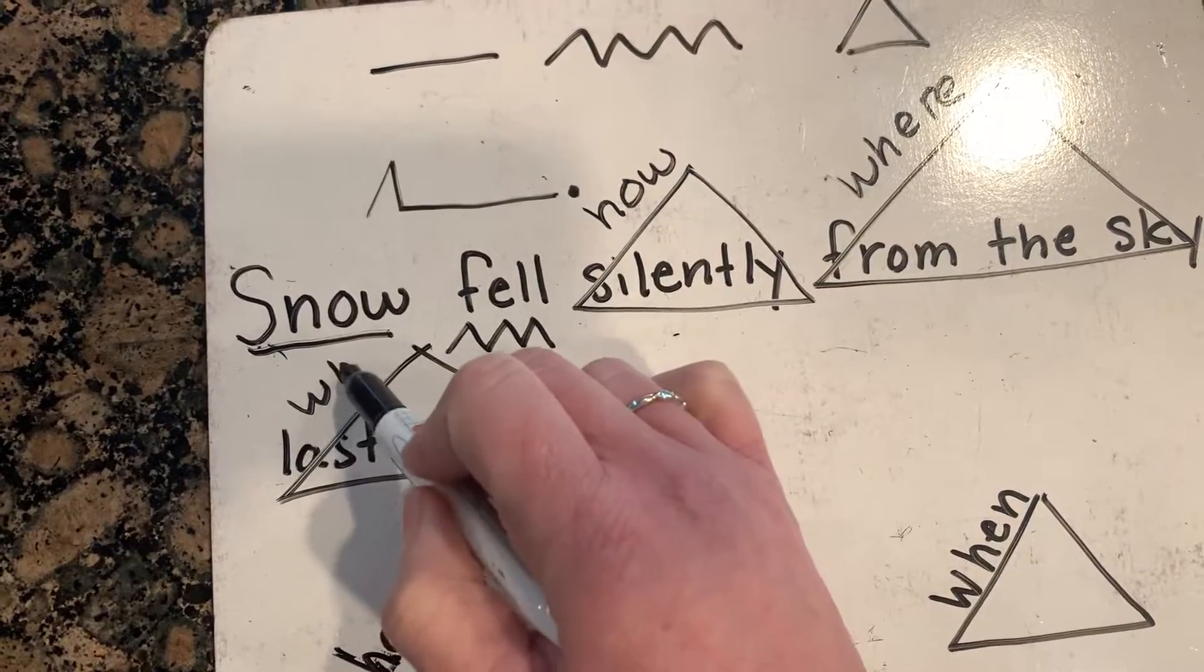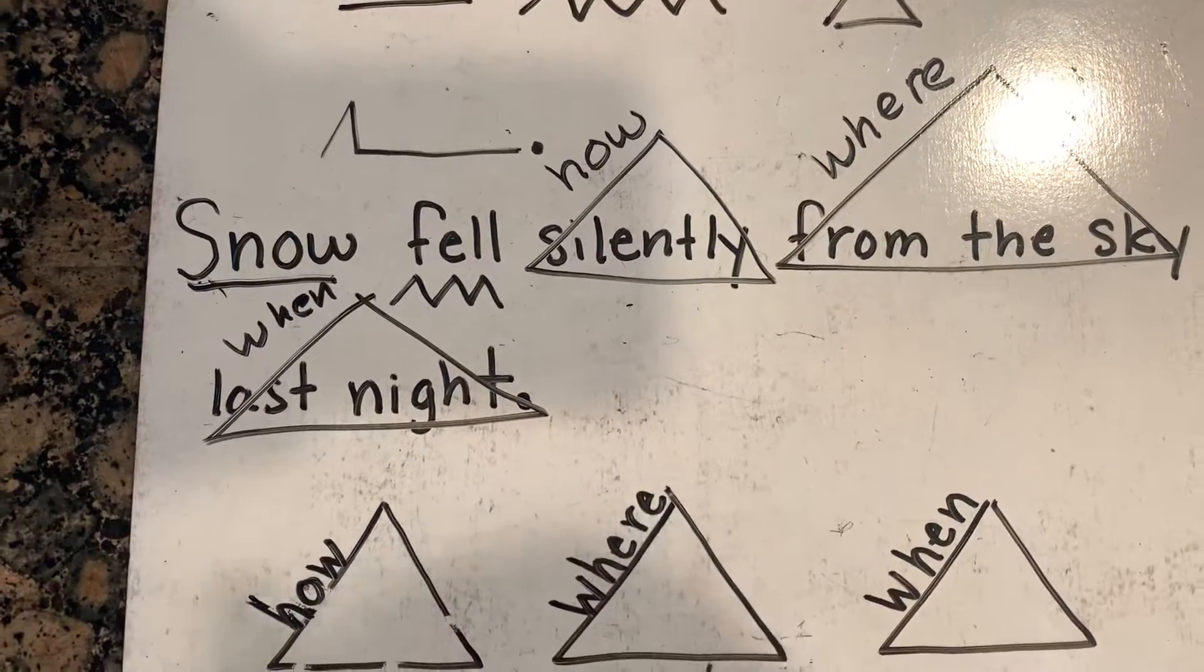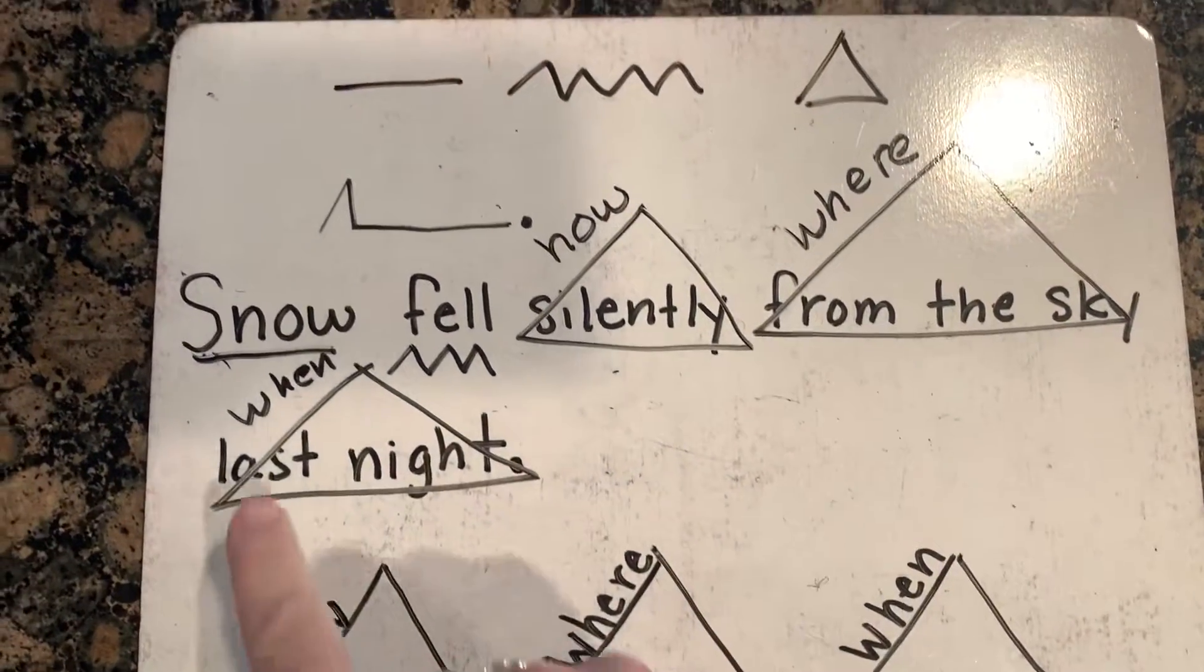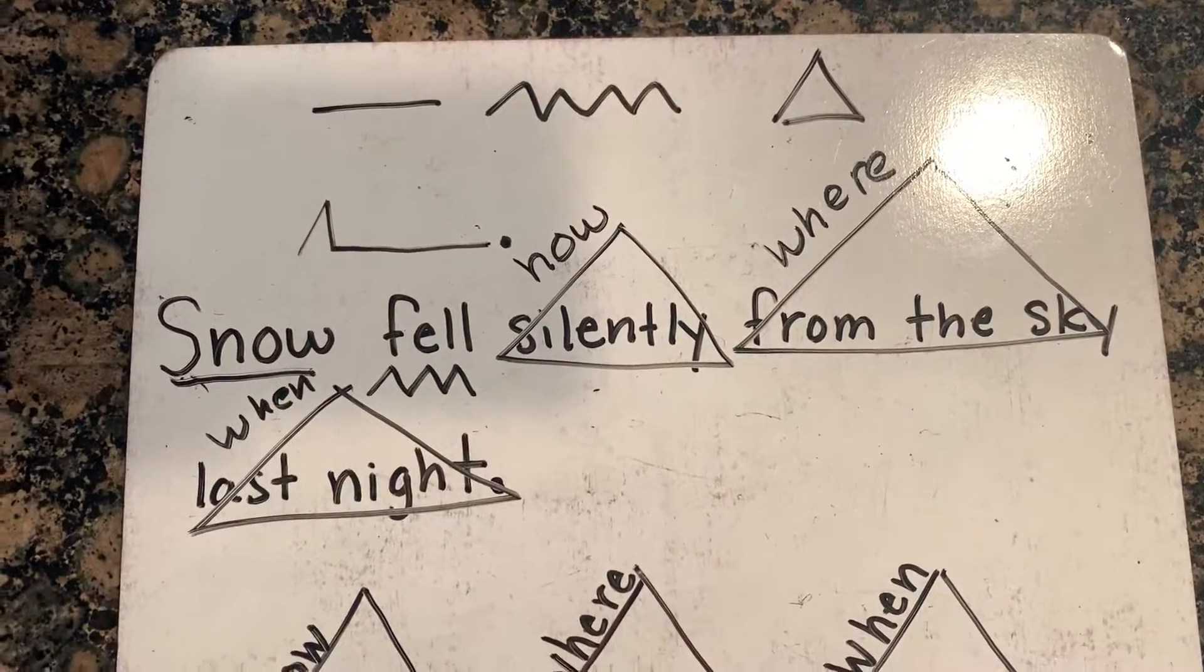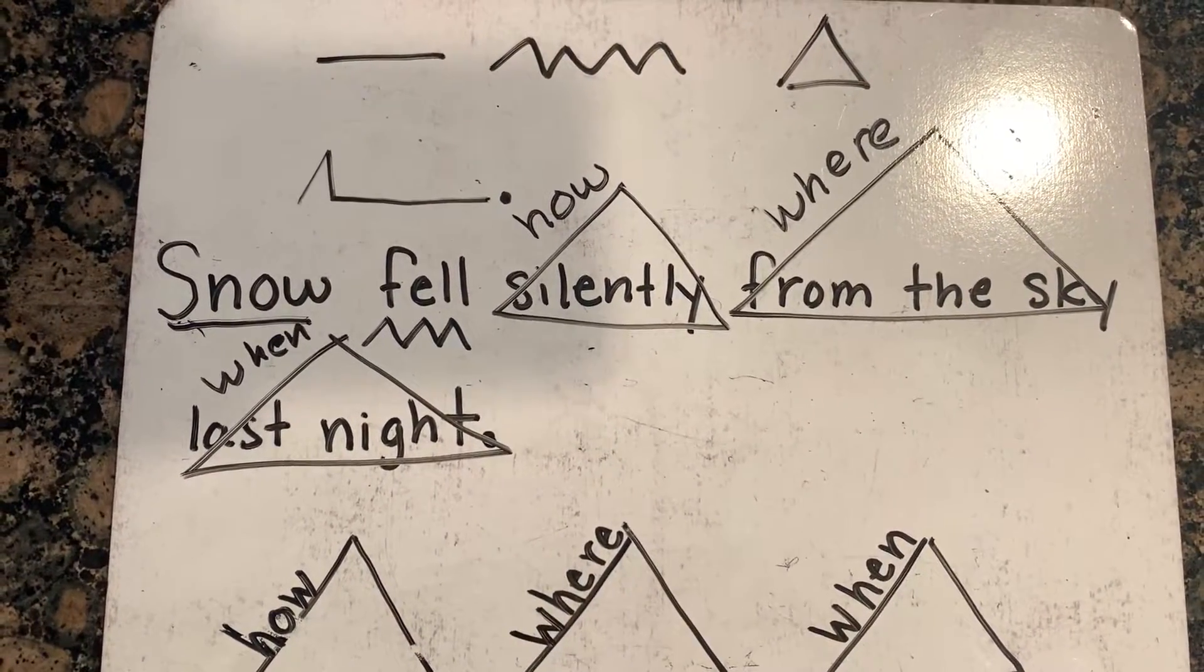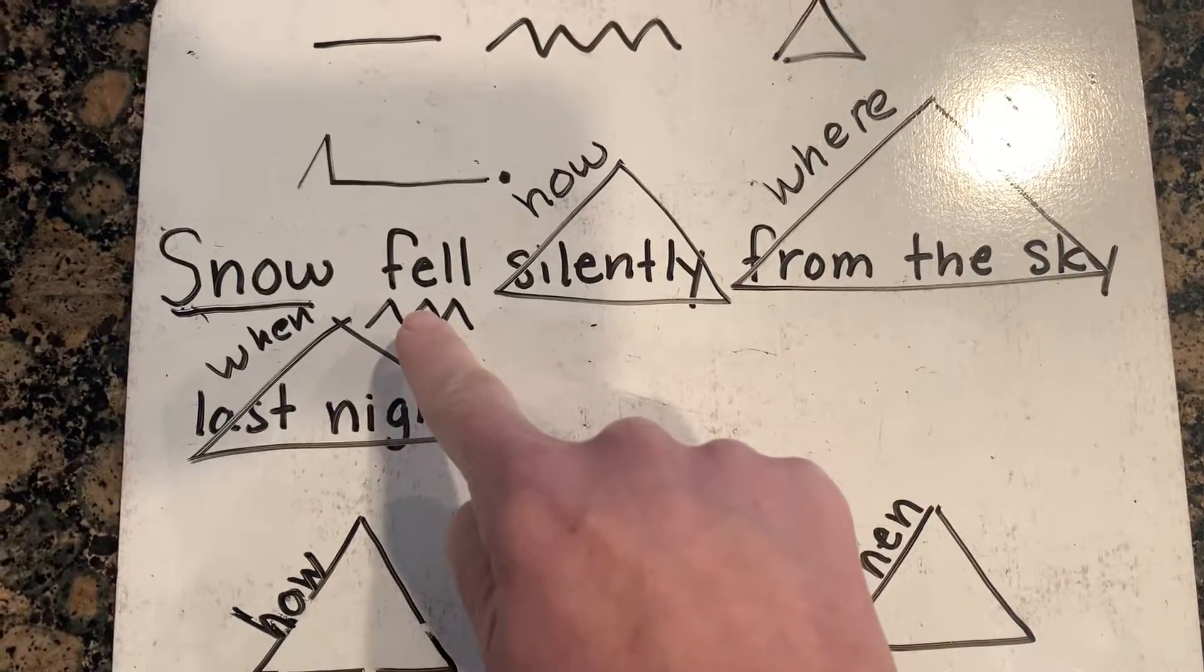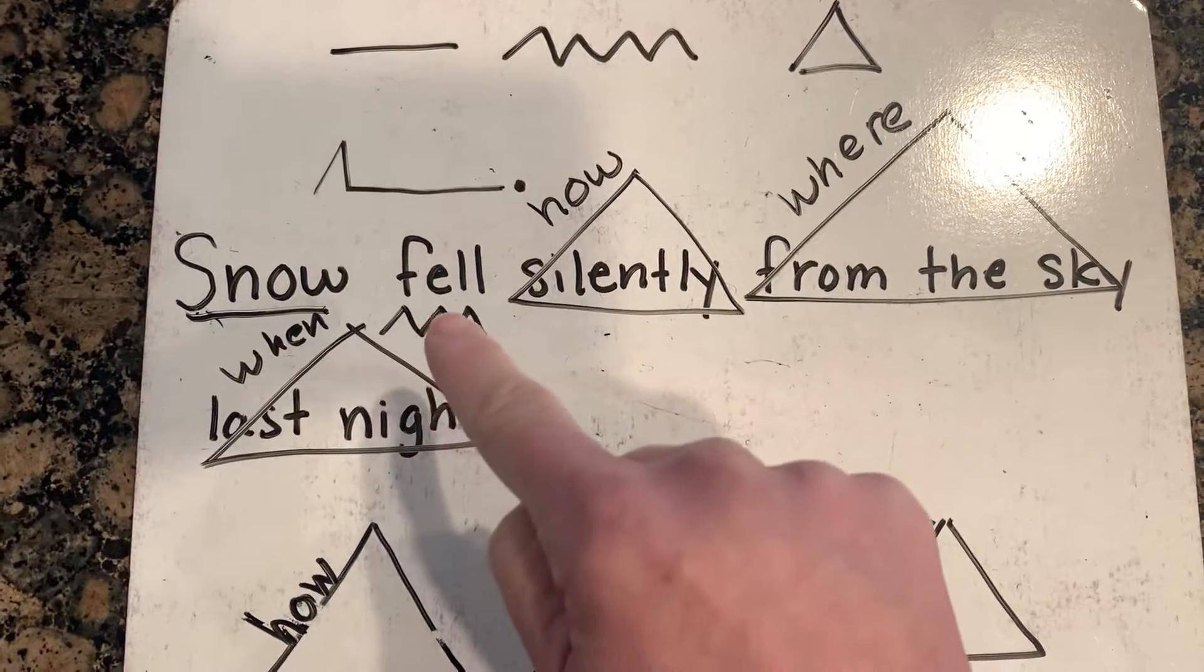So my sentence is: snow fell silently from the sky last night. I was able to take my subject and my verb - snow fell. That's a simple sentence right there. I made my sentence a lot stronger and better by putting my expanders in. I made my sentence longer by telling how snow fell, where the snow fell, and when the snow fell.